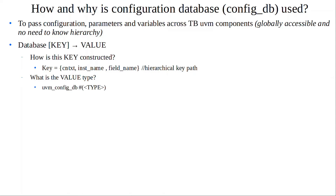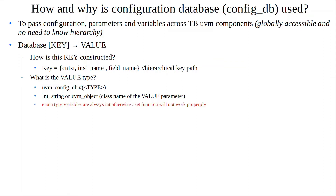The value type can be int, string, or other kinds of uvm_object types. It could also be a bus interface, for example when we're trying to pass a virtual interface from the test bench to the driver. One important exception: if you have enum type variables, you need to make sure the parameter is int, because otherwise there's no one-to-one correlation and the set function won't work properly. Using int makes it easier to set a particular enum variable and retrieve it.